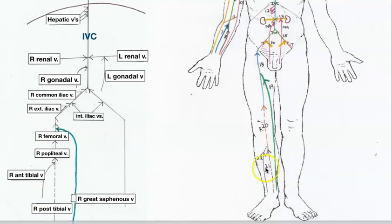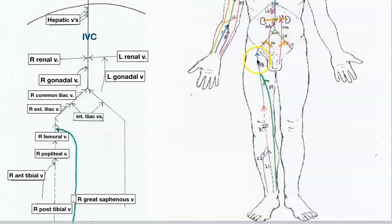On the blank anatomical diagram, the anterior tibial vein and posterior tibial vein join to form the popliteal vein, which flows into the femoral vein. The great saphenous vein is a superficial vein, while the tibial and popliteal veins are deep veins. The femoral vein passes underneath the inguinal ligament to become the external iliac vein.